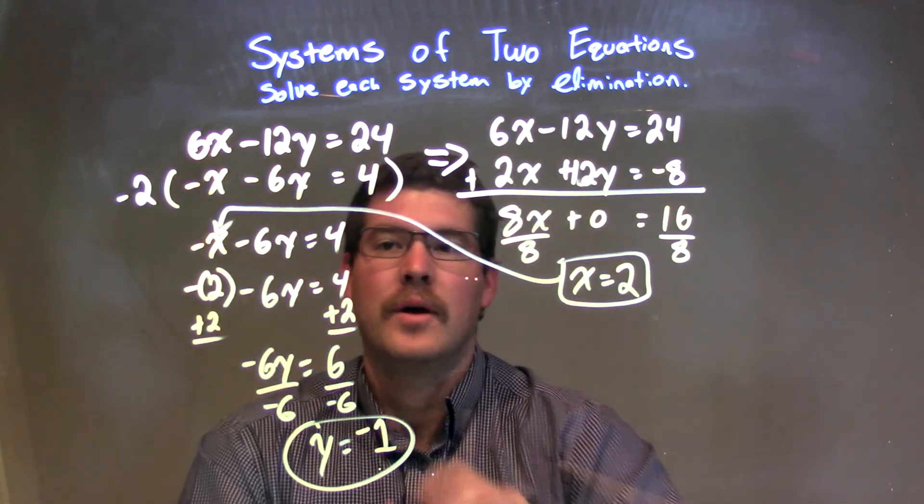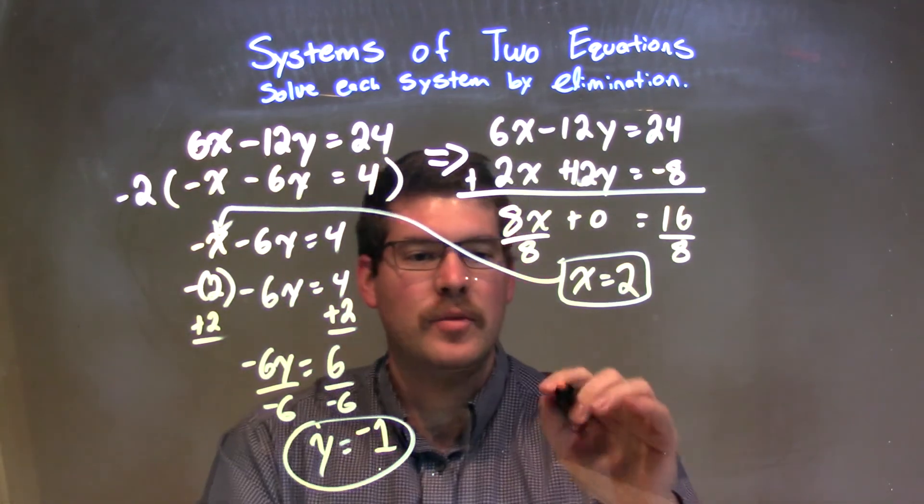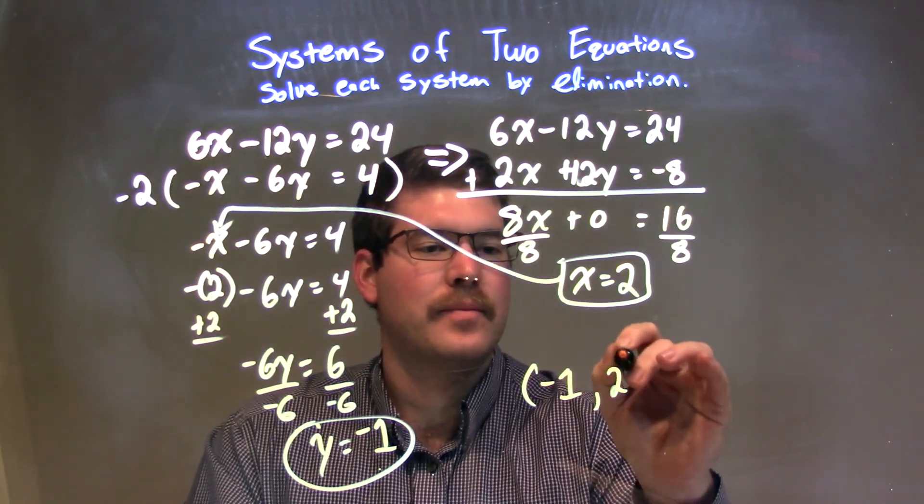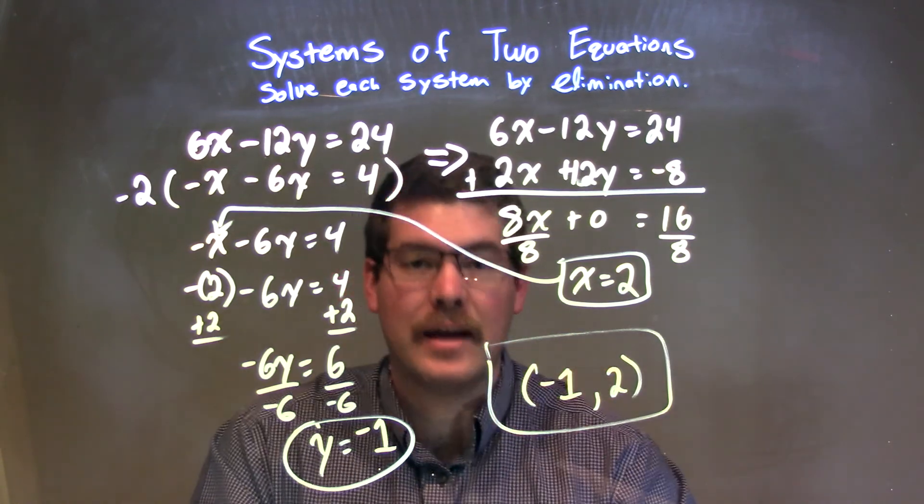We have our x value and our y value. They can come together to be a coordinate point, which is negative 1 comma 2. And there we have our final answer.